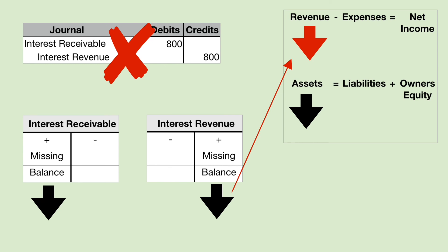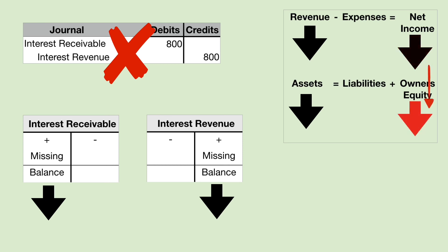The interest revenue understatement is transferred to the income statement — revenues are understated. If you start with a number that is understated and then subtract the correct number of expenses, your answer will still be understated. Net income is closed to retained earnings at the end of the year, so this understatement of net income will lead to an understatement of owner's equity.